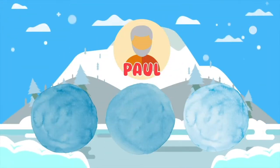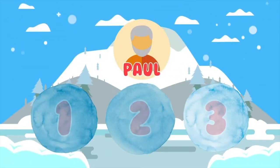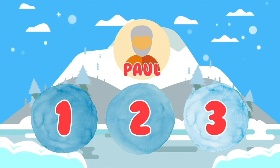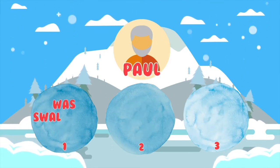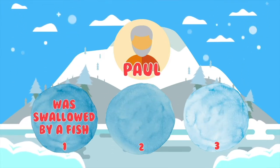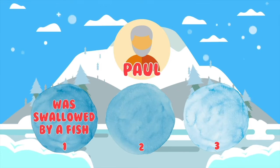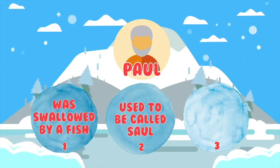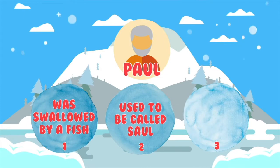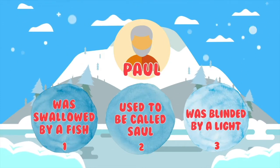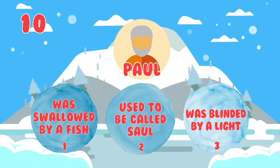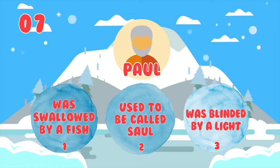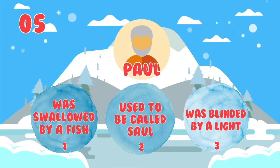Paul is our next Bible character. Which of these is not true about Paul? One: Paul was swallowed by a fish. Two: Paul used to be called Saul. Three: Paul was blinded by a bright light. It's time to decide which of these snowballs is not telling the truth.